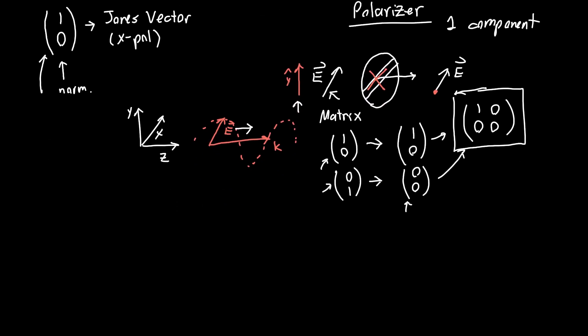This now allows us to directly figure out how any polarization state behaves as it passes through a polarizer. What happens when we have the state, say, 1/√2 (1,1)?